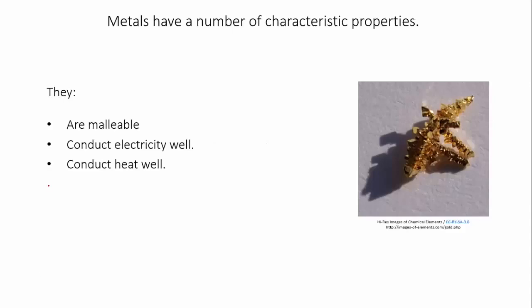Metallic substances have a number of characteristic properties. They're malleable, they conduct electricity well, they conduct heat well, and they also have that shiny metallic luster that is so recognizable.